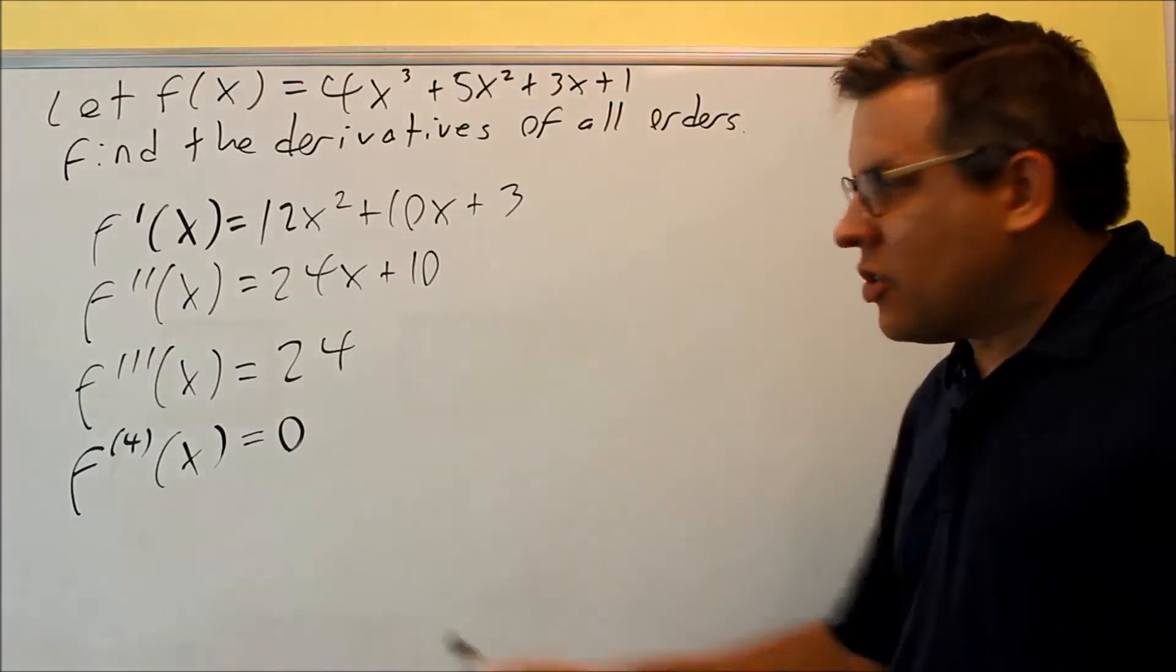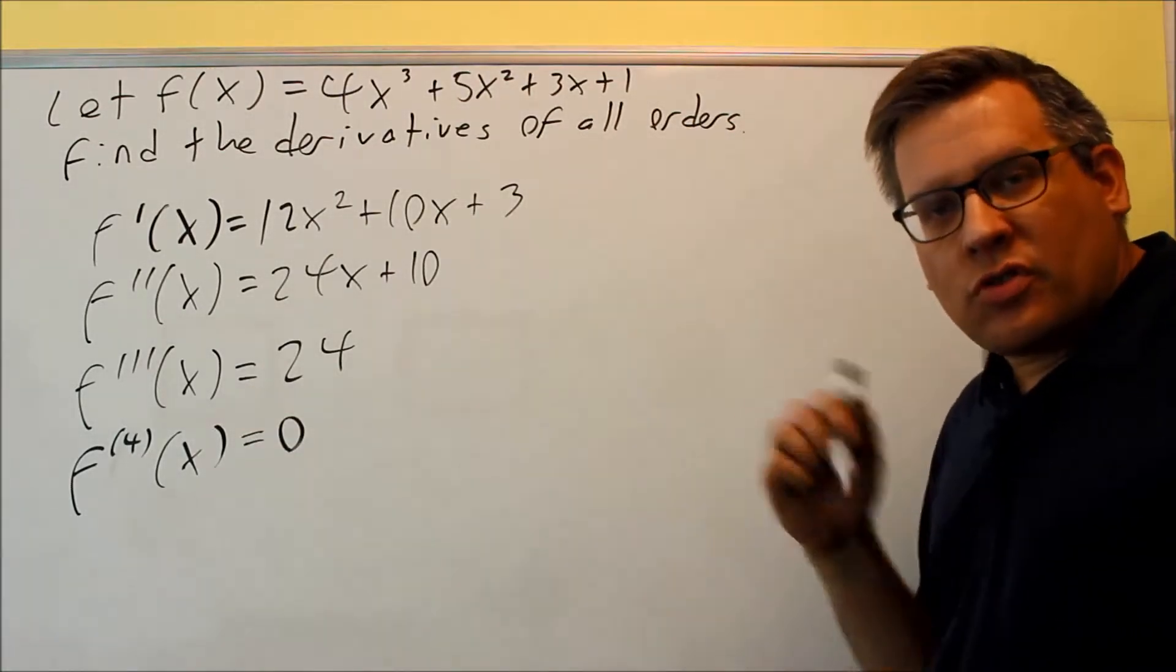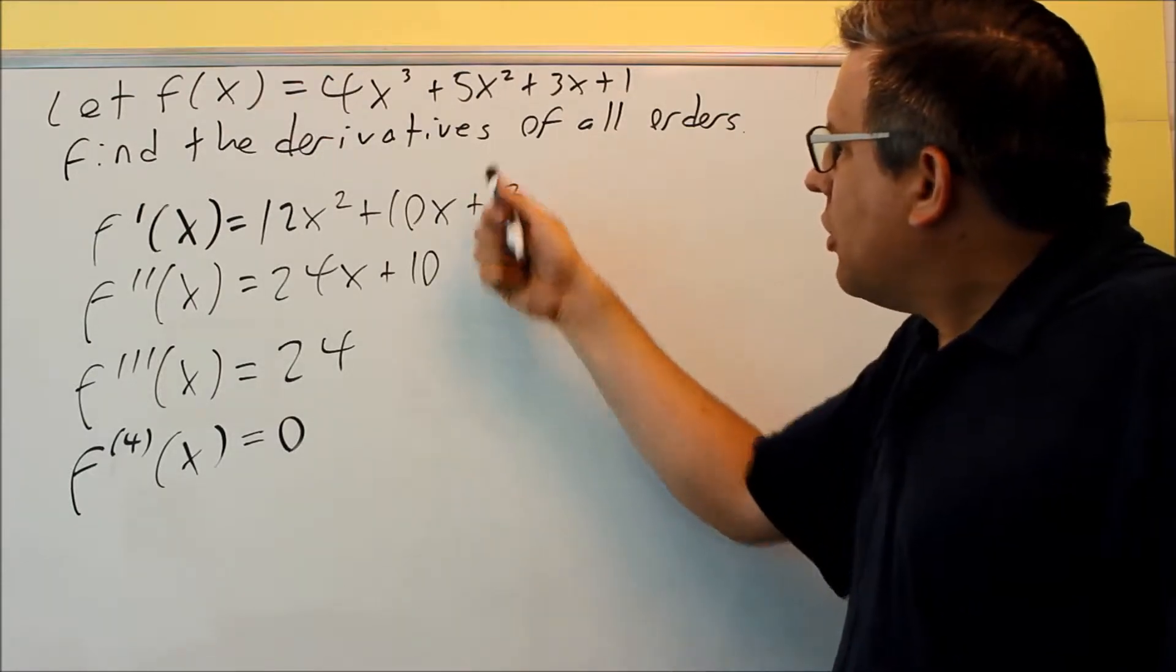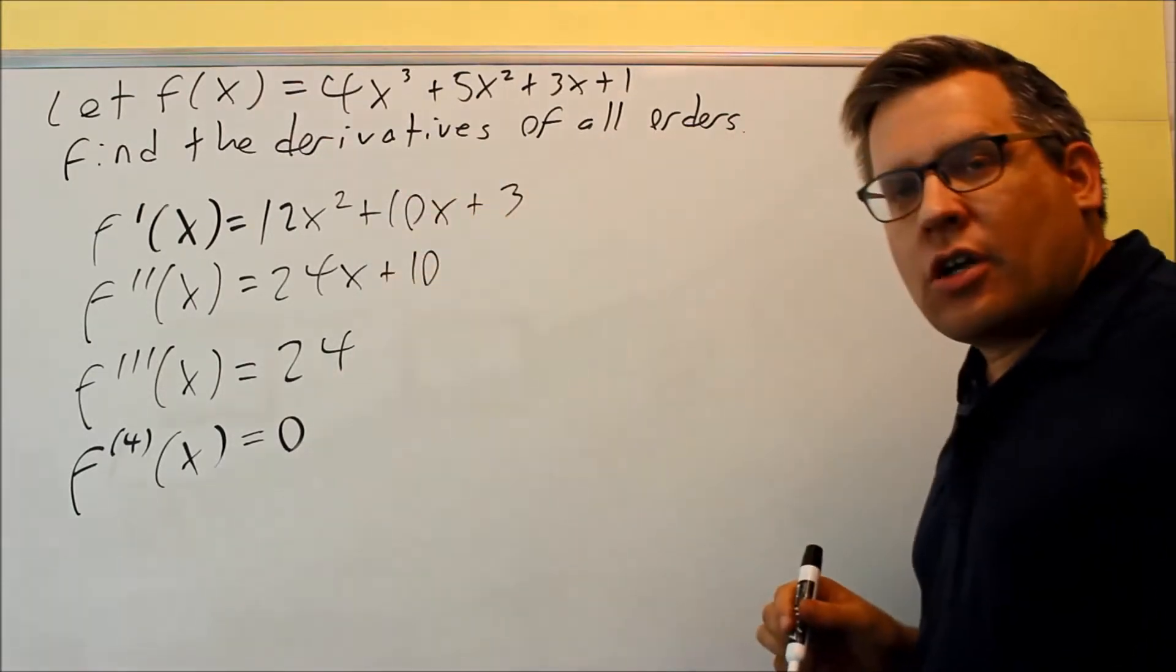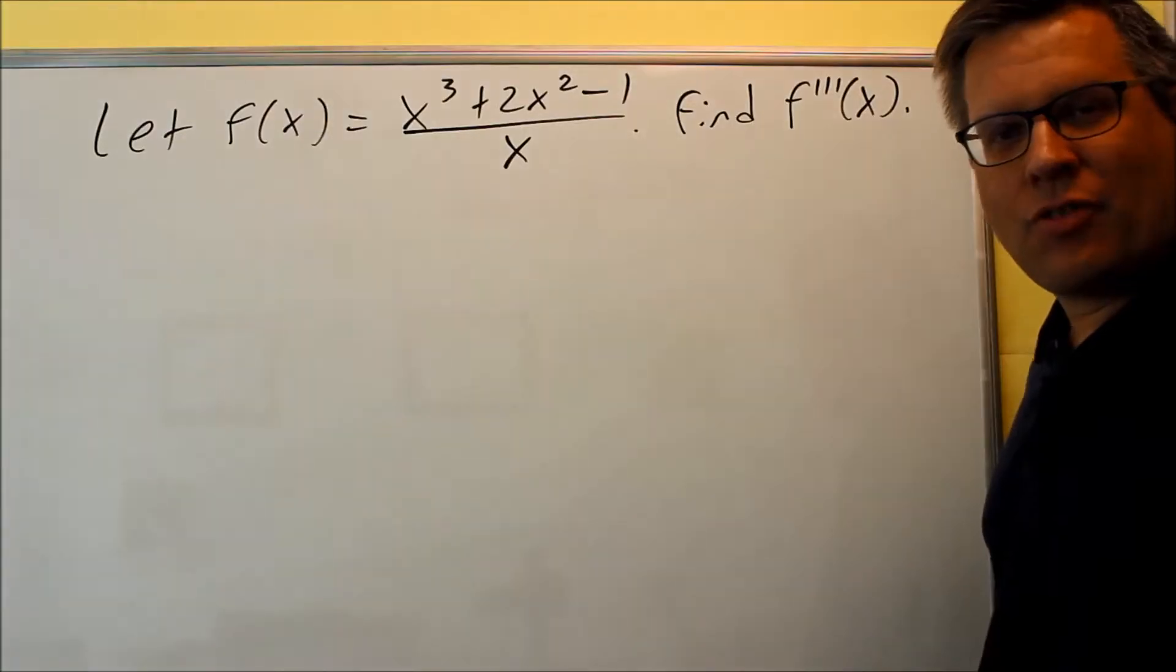Once you get to zero, that means that all other derivatives past that will be zero. So that means you've found the derivative of all orders. You've taken it all the way down until you get to zero.